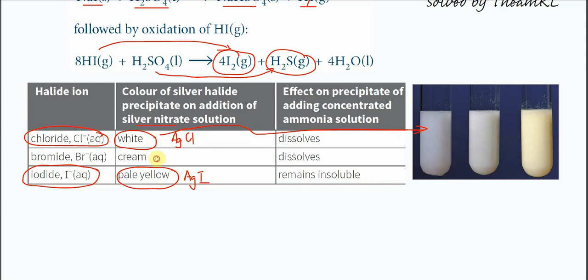For the bromide, then it will form this cream precipitate. For the iodide, the AgI will form this pale yellow precipitate. This one I took it from the textbook as well. So this is how it looks like when the silver nitrate added.